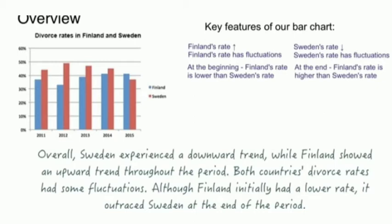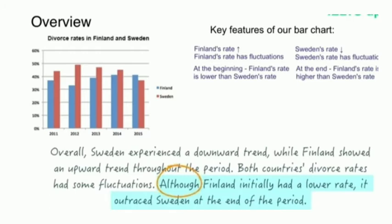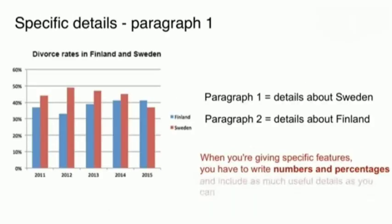We showed that Sweden's divorce rate is following a downward trend with fluctuation, and similarly Finland's rate is following an upward trend. Notice the comparison vocabulary used: 'although' means 'on the other side.' Other comparison terms include: 'on the other side', 'whereas', 'while', 'on the contrary'. These are terms and vocabulary you can use to make comparisons — and comparison is very important in Task 1.